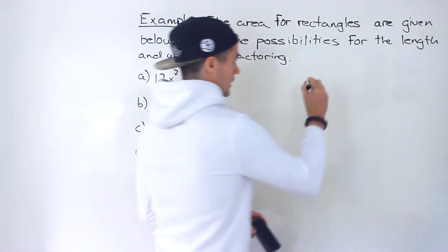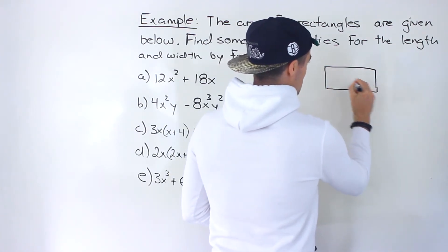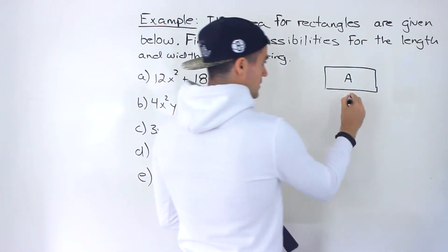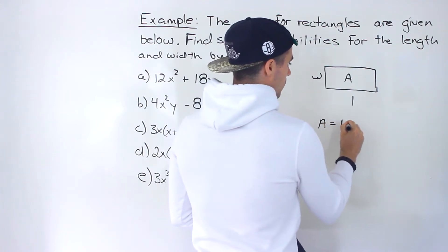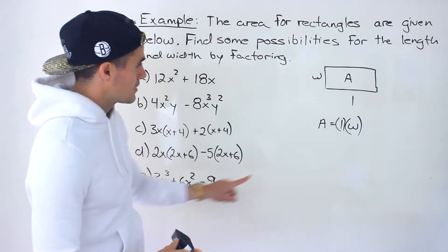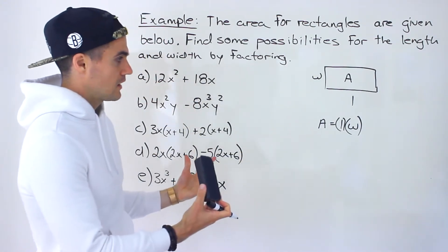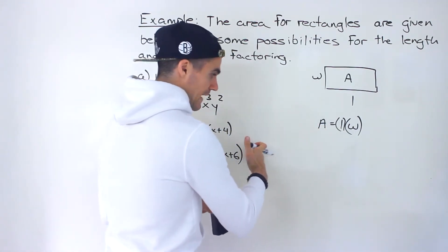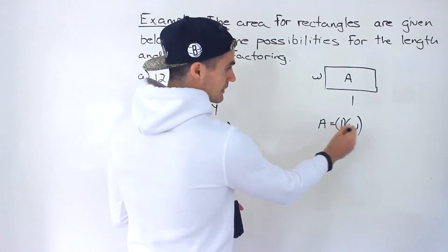Basically what's going on is we have rectangles and we are given their area. The area of a rectangle equals length times width. So we're going to take these area expressions, factor them, and once factored, the resulting factors can then represent the length and width.